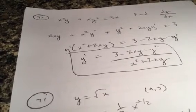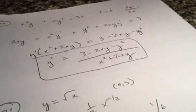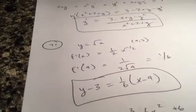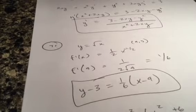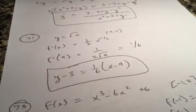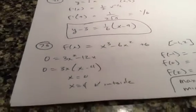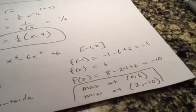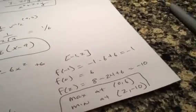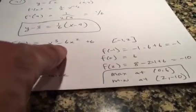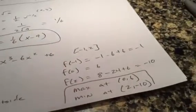Find the equation of the line tangent to that curve at (9, 3): take the derivative and plug in 9 for x, giving a slope of 1/6 — a pretty easy equation. For the absolute min and max on the interval negative 1 to 2, take the derivative and set it equal to zero. Note that x equals 4 is outside the interval, but x equals 0 is in it. Plug all critical values and endpoints into the original function — the max and min at x equals 2 gives negative 10.